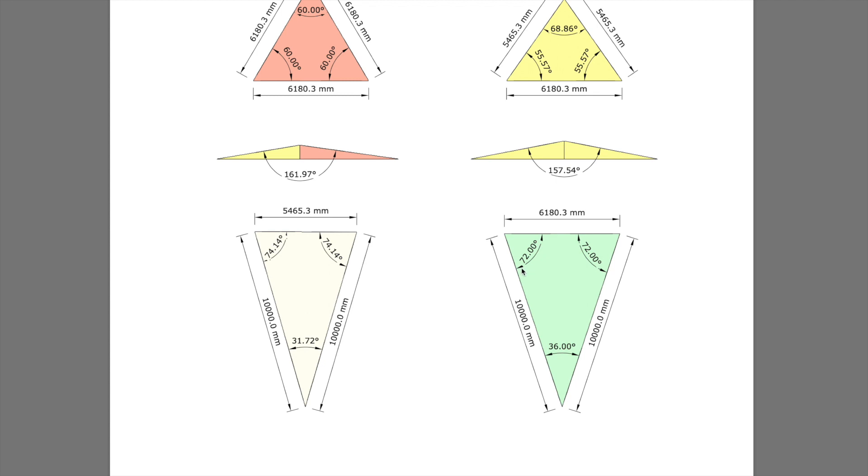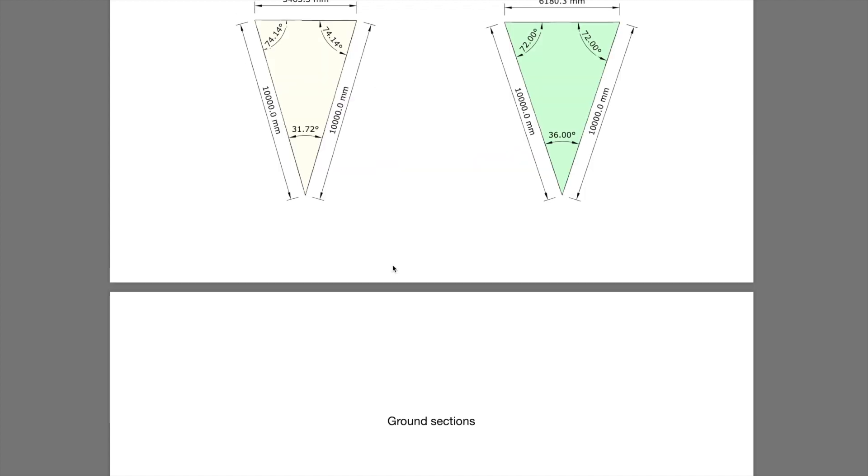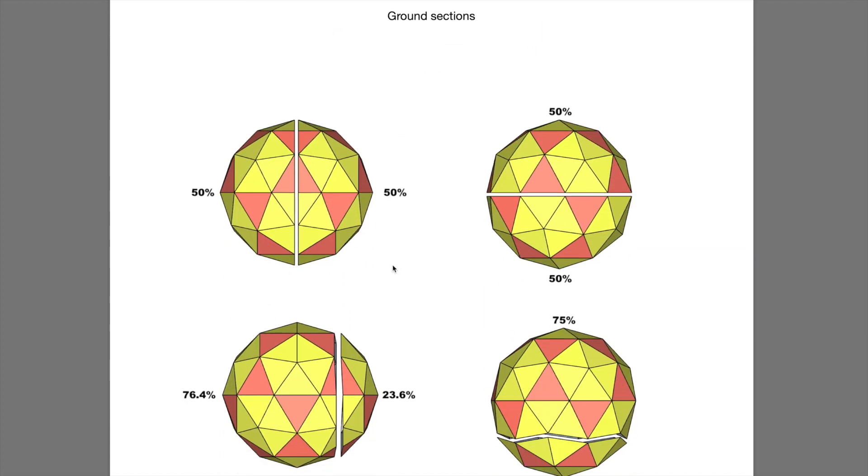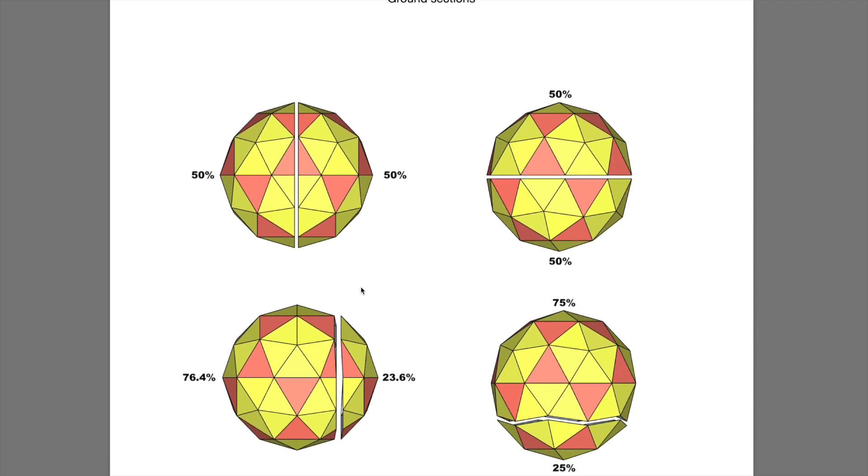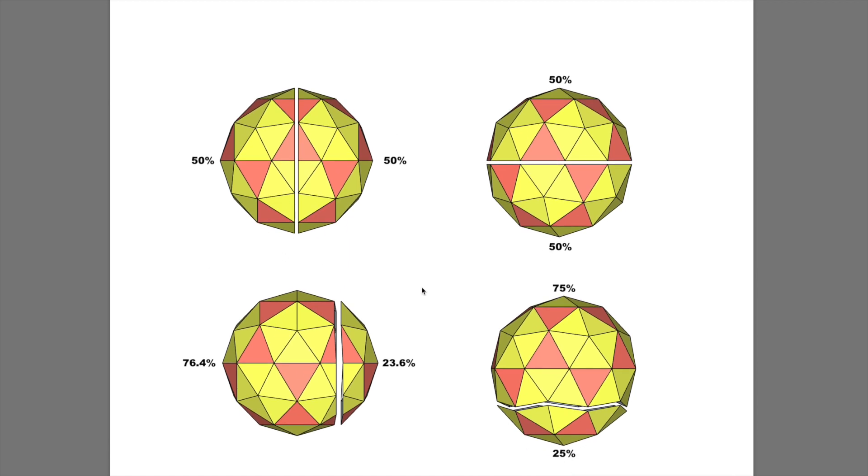Right, next important one is ground section. This is what's not in any of the online calculators currently. Ground sections—nobody has any information. They tend to do number of panels on a set dome, but not really anything about the ground elevations.